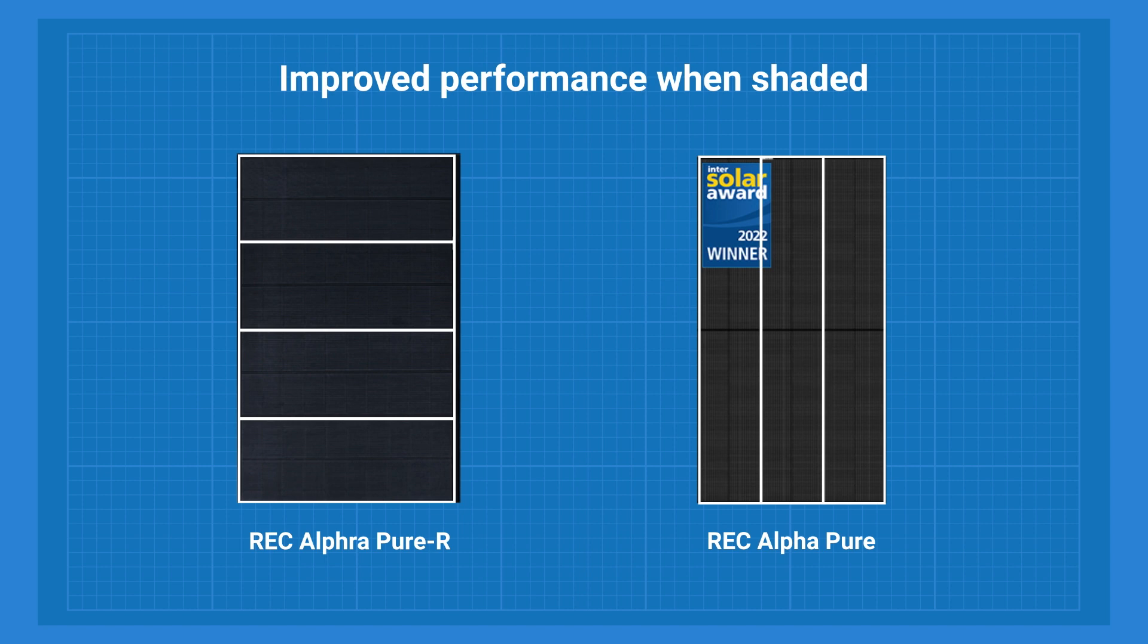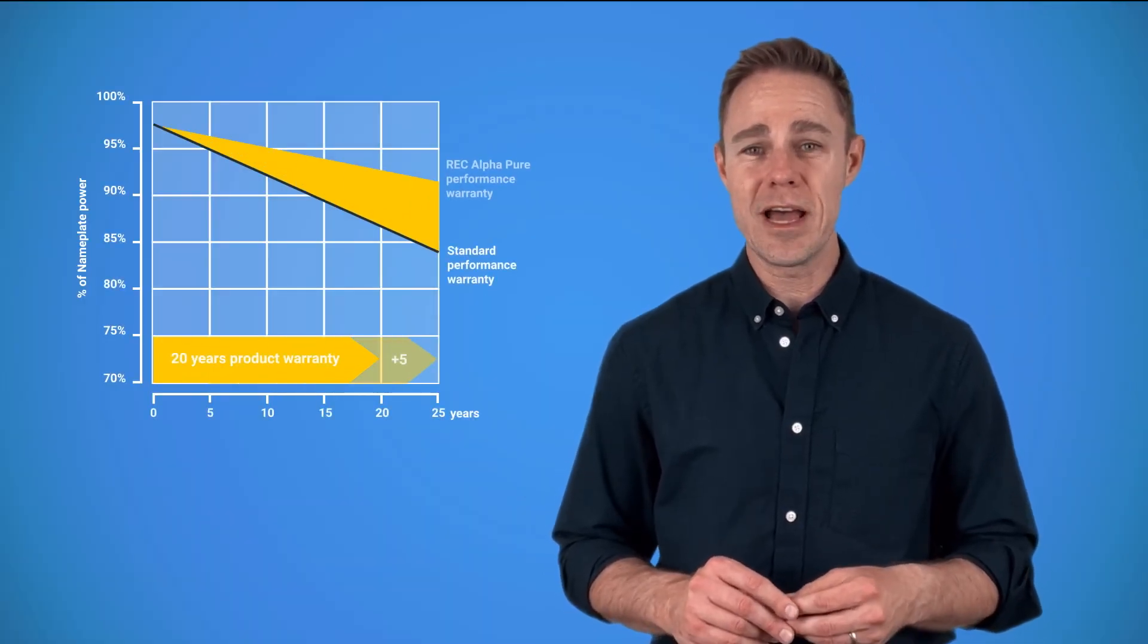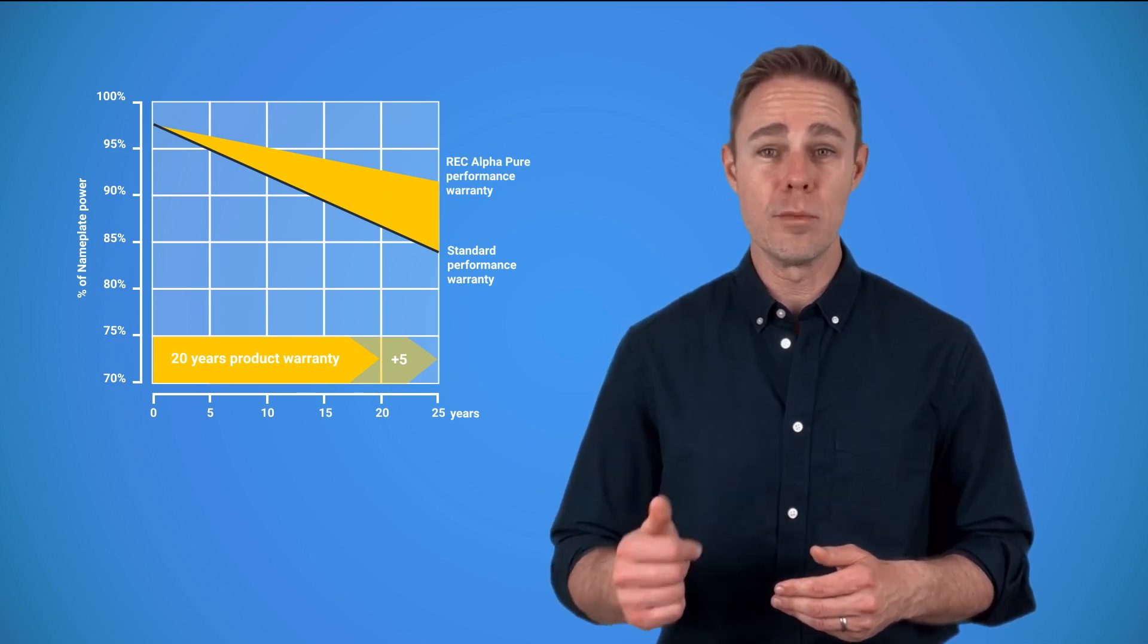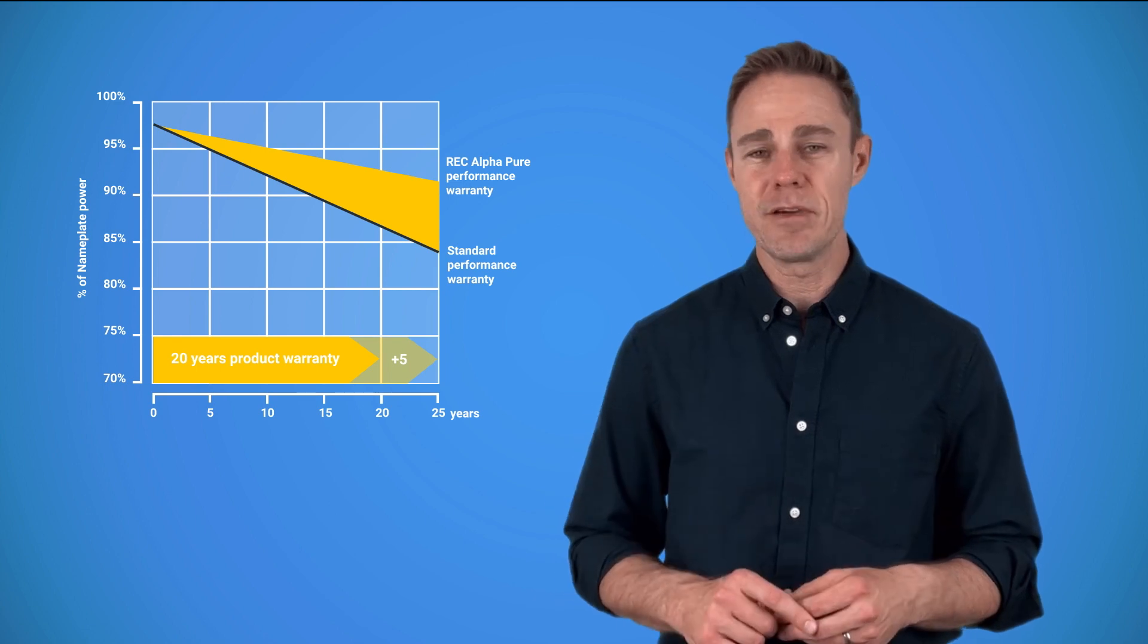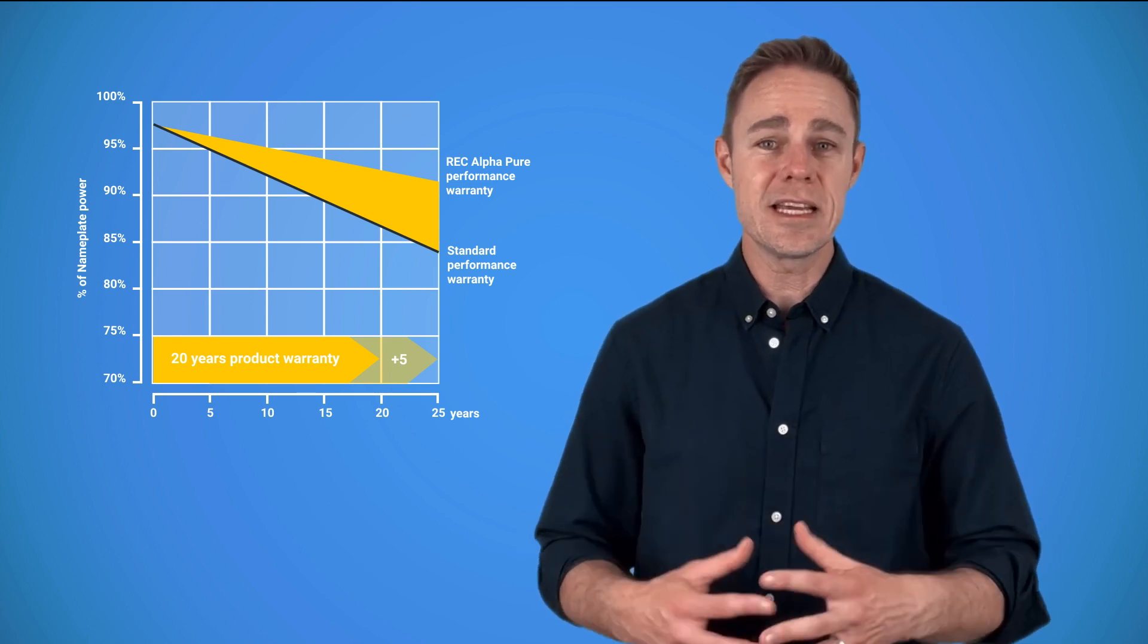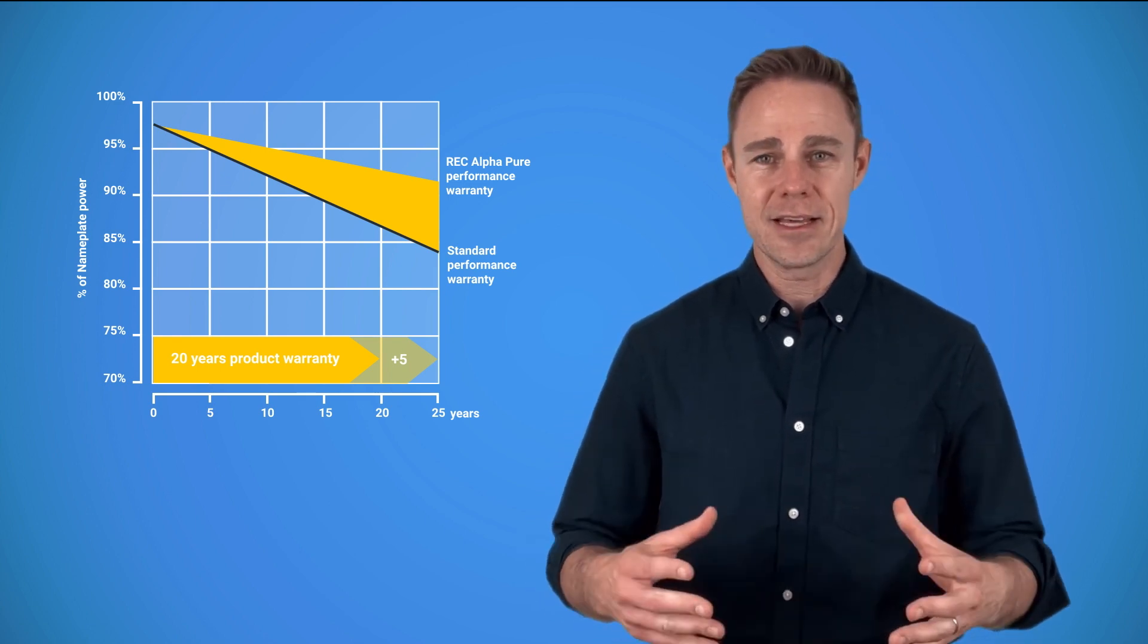Instead of three bypass diodes, Pure-R now has four. This improves the shading tolerance of a panel. As you may know, bypass diodes split panels into independent sectors, so when a cell in one sector gets shaded, it doesn't affect the other ones. The panel comes with a 25-year warranty for product, performance, and labor when installed by REC professionals. Otherwise, it's a 20-year guarantee for product and nothing for labor. The downside of an Alpha Pure-R is that it costs a lot, but after all, it is a premium class solar panel.